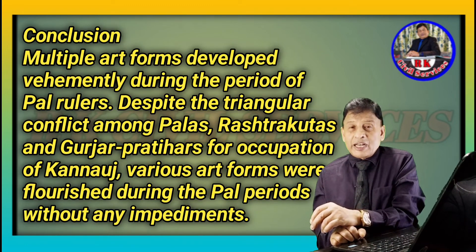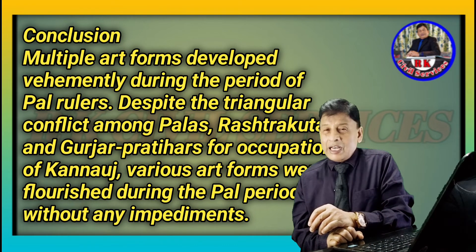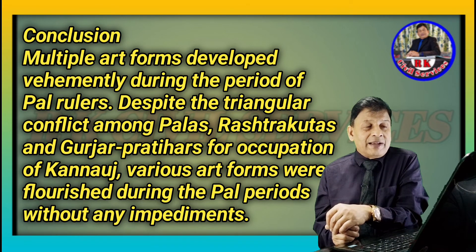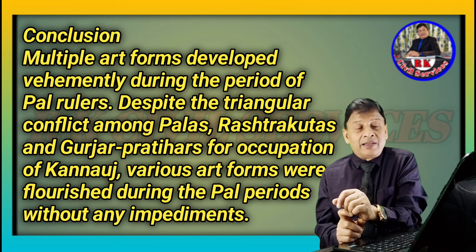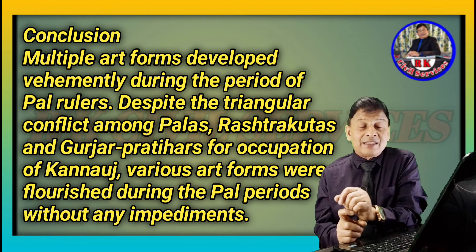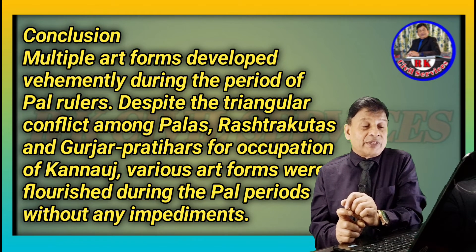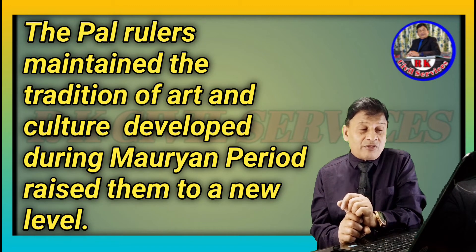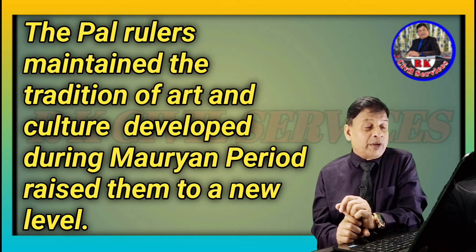In conclusion, multiple art forms developed remarkably during the period of Pala rulers. Despite the triangular conflict among the Palas, Rashtrakutas, and Gurjara-Pratiharas for occupation of Kanauj, various art forms flourished during the Pala period without any impediments. The Pala rulers maintained the tradition of art and culture and raised them to a new level.